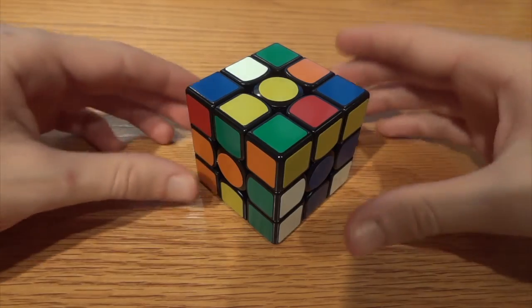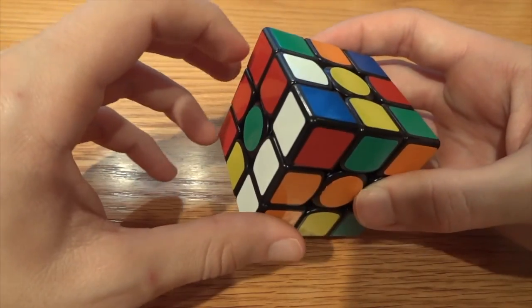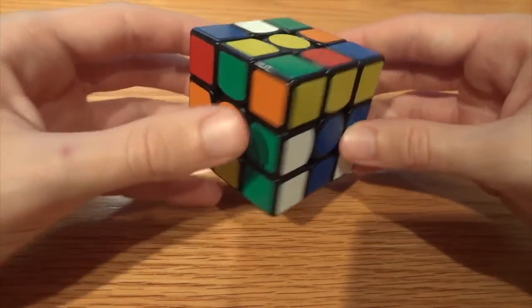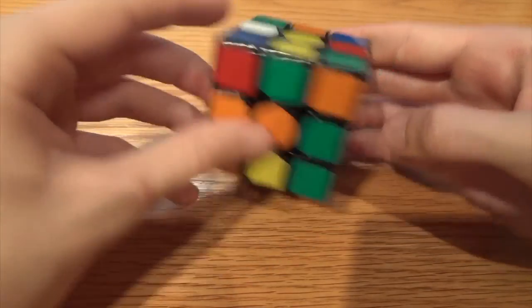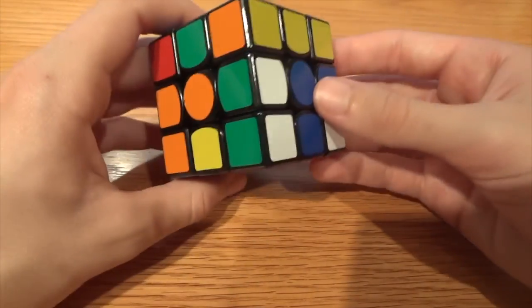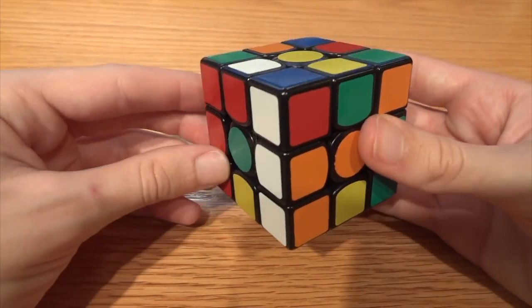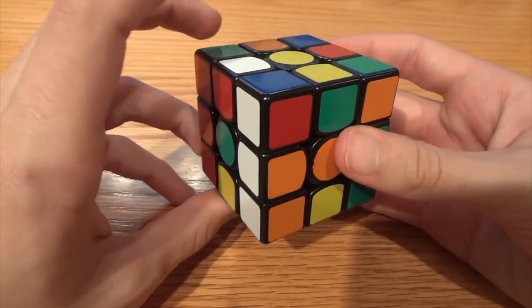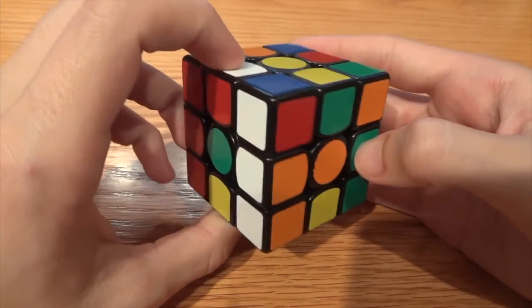For this solve I see that orange is set. Green and red can be put relative to each other really easily, and blue is set. This is another great scramble. What I'm going to do is put red and green in the bottom layer.